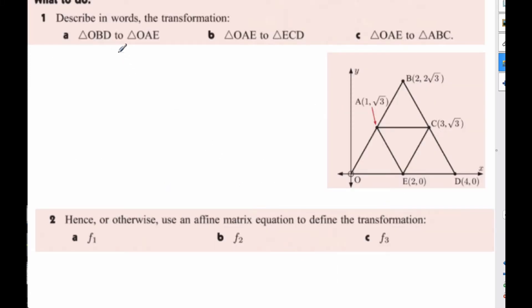So I want to describe in words the transformation of OBD going to OAE. Well, in order to do that, basically what's happening is I'm shrinking it down. Half of this, by two is coming to one, so it is shrinking by one-half.